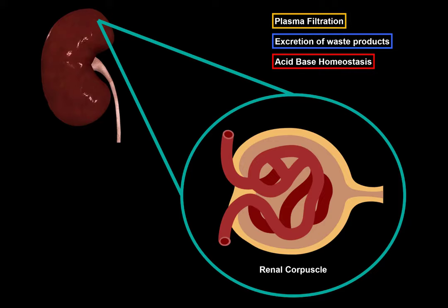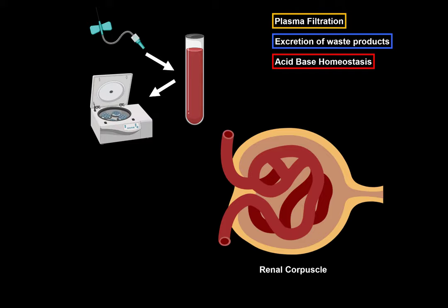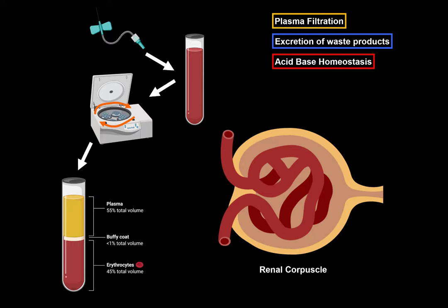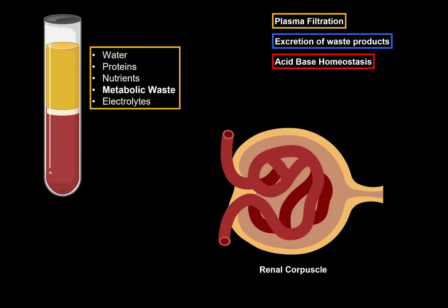The head of the nephron is called the renal corpuscle, and this is the part that primarily filtrates the plasma. When you draw blood from the body into a tube, you get whole blood. If you put it into a centrifuge, it's going to separate the blood into pure erythrocytes at the bottom, buffy coat consisting mainly of white blood cells, and plasma. When whole blood goes through the renal corpuscle, the plasma gets filtrated. Plasma consists of everything that is not cells: water, proteins, nutrition, electrolytes, and metabolic waste products such as ammonia, uric acid, urea, creatinine, and different types of amino acids.